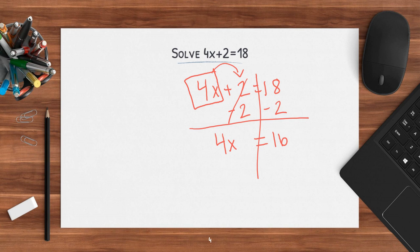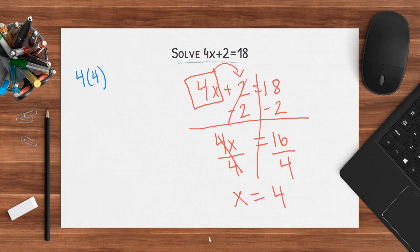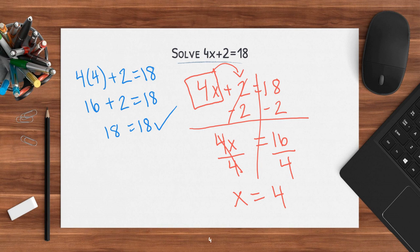Now I have 4x. When I have a 4 and an x together, that means I'm multiplying. So the inverse operation will be dividing. I divide both sides by 4. 4 divided by 4 is just 1, so I'm left with x equals — what is 16 divided by 4? 4. Now if I plug that back in, I have 4 times 4 plus 2 equals 18. 4 times 4 is 16, so 16 plus 2 equals 18. 18 equals 18 — that checks out.